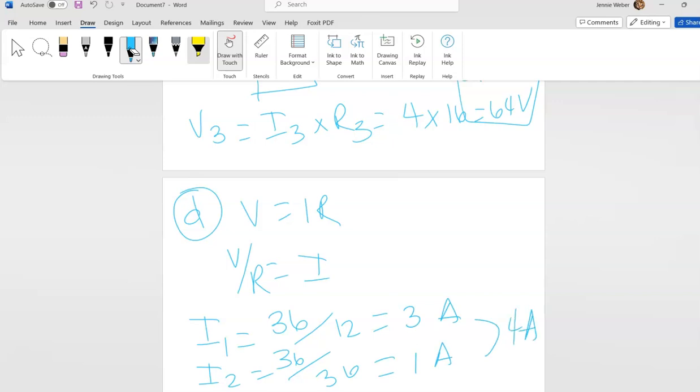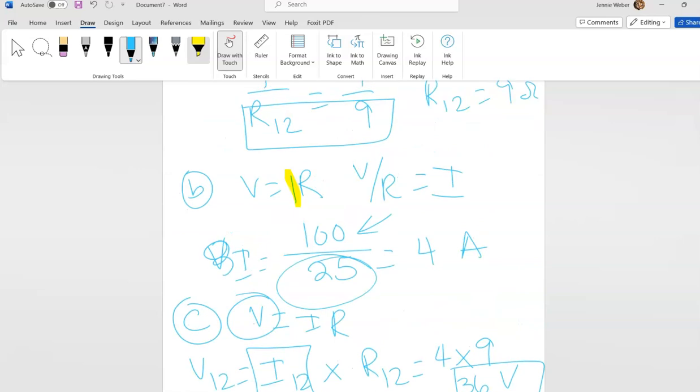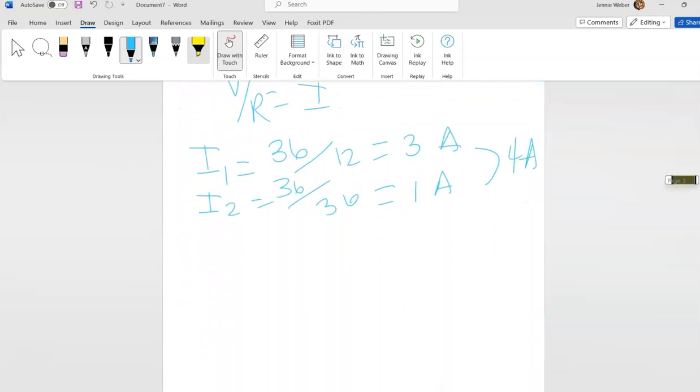Then this last one, I3, that's going to be, well what did I get? I got 64 divided by 16, 4 amps.